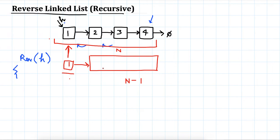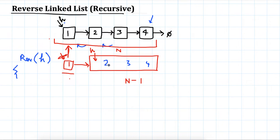We can separate out one node and call the reverse function on the rest. So whatever head was given to the original function, we move head to its next and call reverse on that. This will internally return a correct list — it will have 4, 3, and 2 — and we assume that this function has worked correctly and moved the head here.